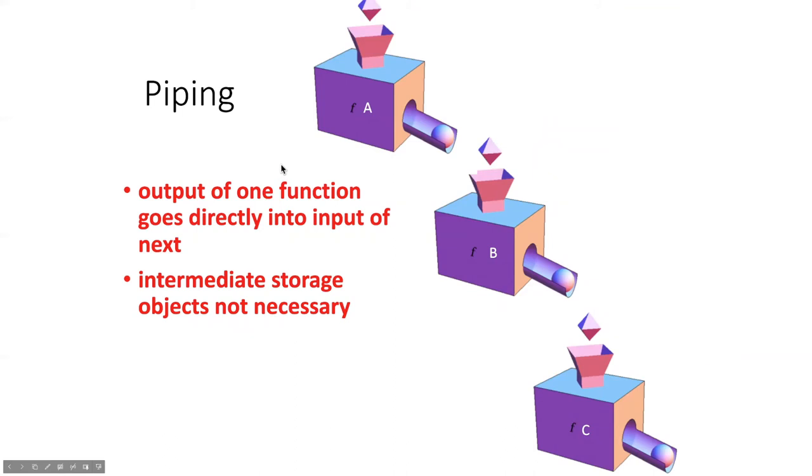So the piping operation sends the output of one function directly into the next one. A major implication of this piping method is that we don't need to have any intermediate objects since the output of one function is just going directly into the next one.